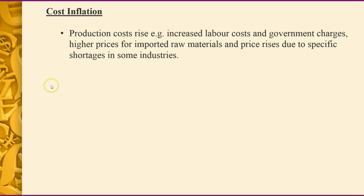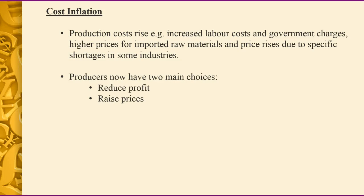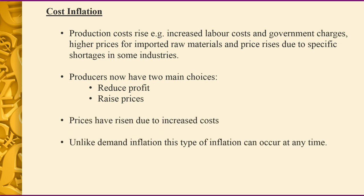The next type is cost inflation. This is where production costs rise — it might be labour costs, such as a minimum wage increase, government charges like the carbon tax introduced on July 1, 2012, or raw materials. When a production cost goes up, as a supplier you can either absorb the cost yourself and reduce your profit, or you raise your prices and pass that cost rise on. So prices have gone up due to an increased cost.